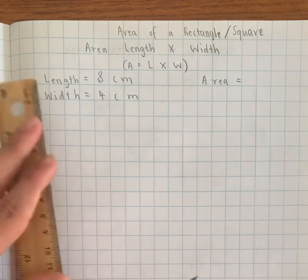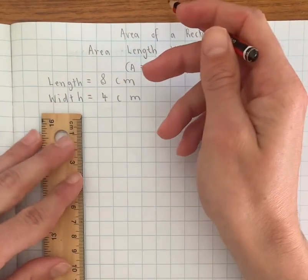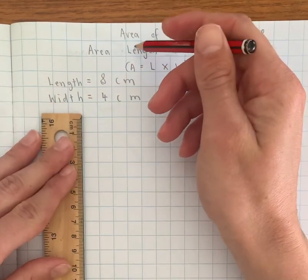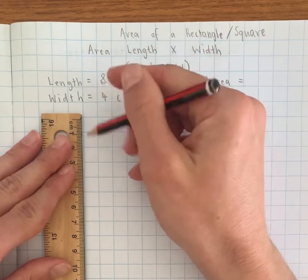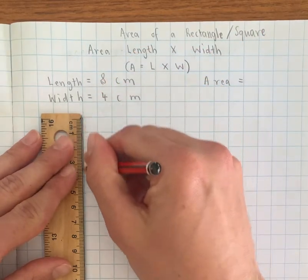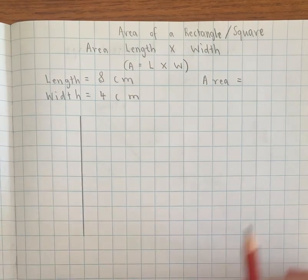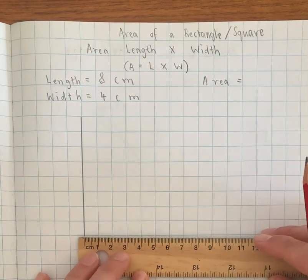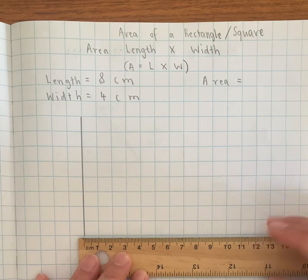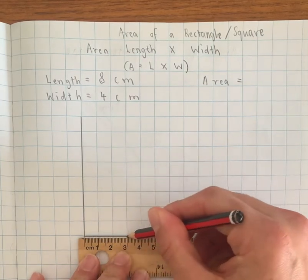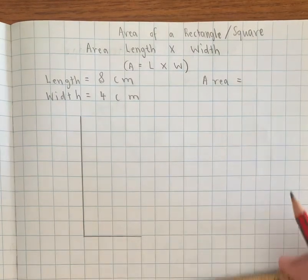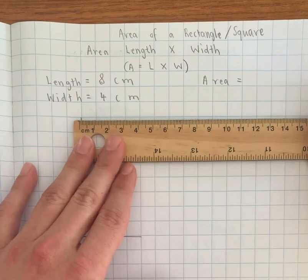So with the length I've got 8 centimeters, which is 8 boxes along my grid because these are centimeter squared, so I rule down 8. And then my width was 4, so I'm going to go 4 centimeters across, like so, and then it's just a matter of joining up the sides.